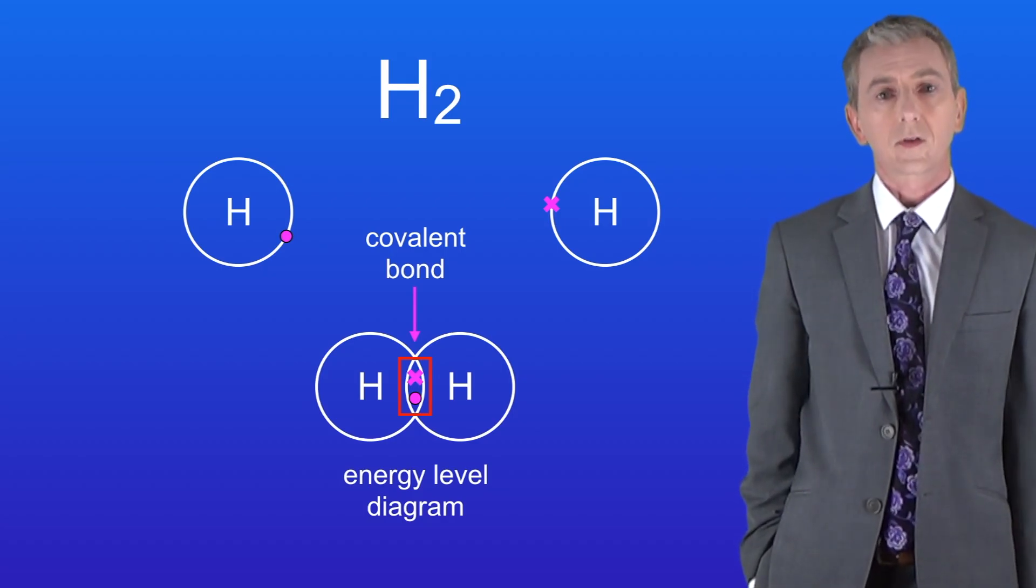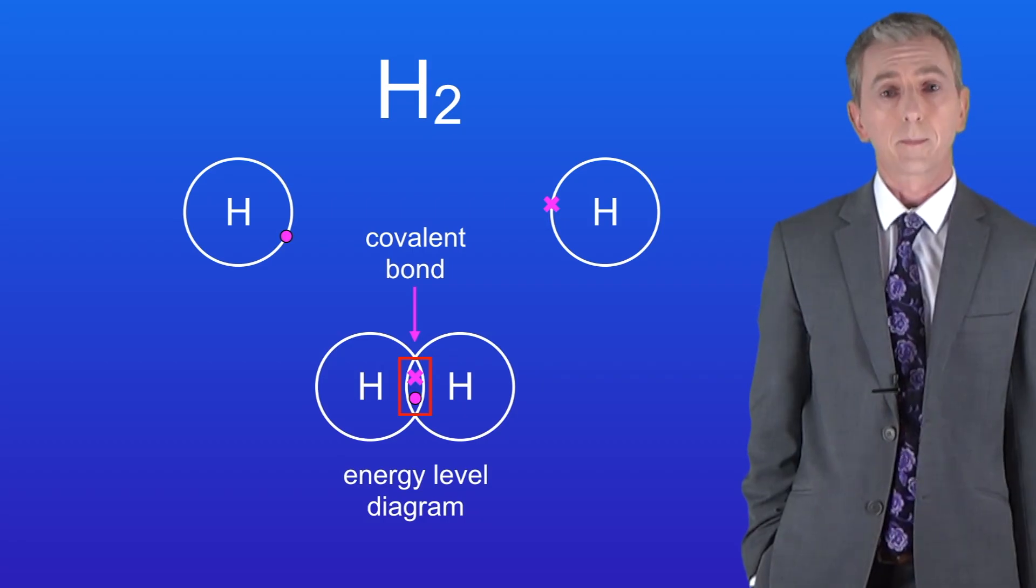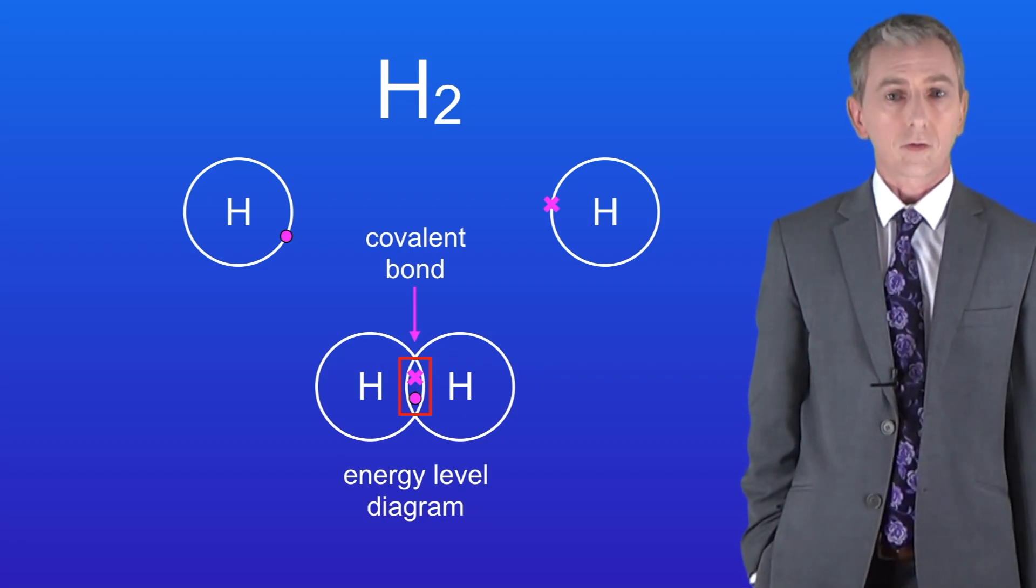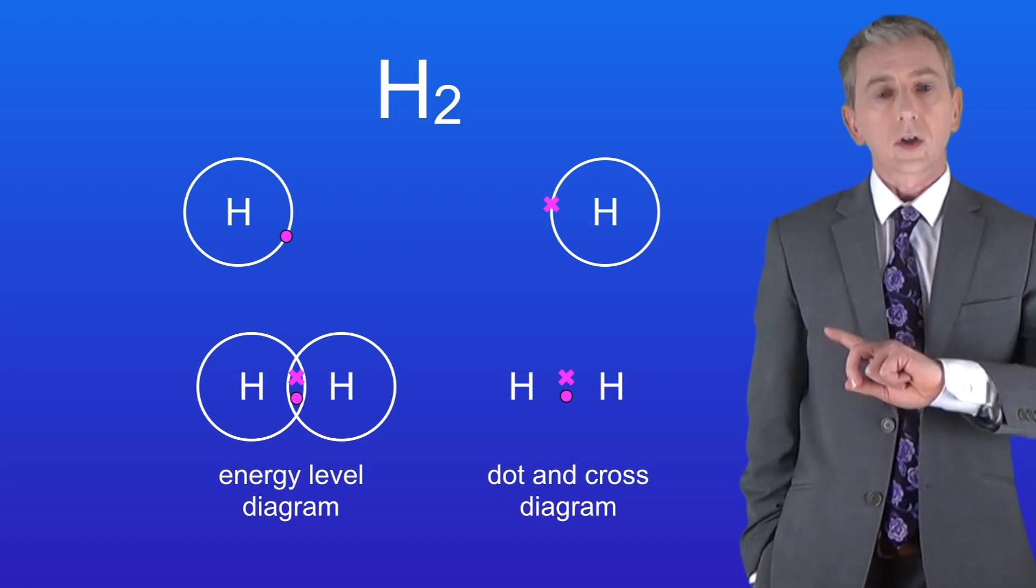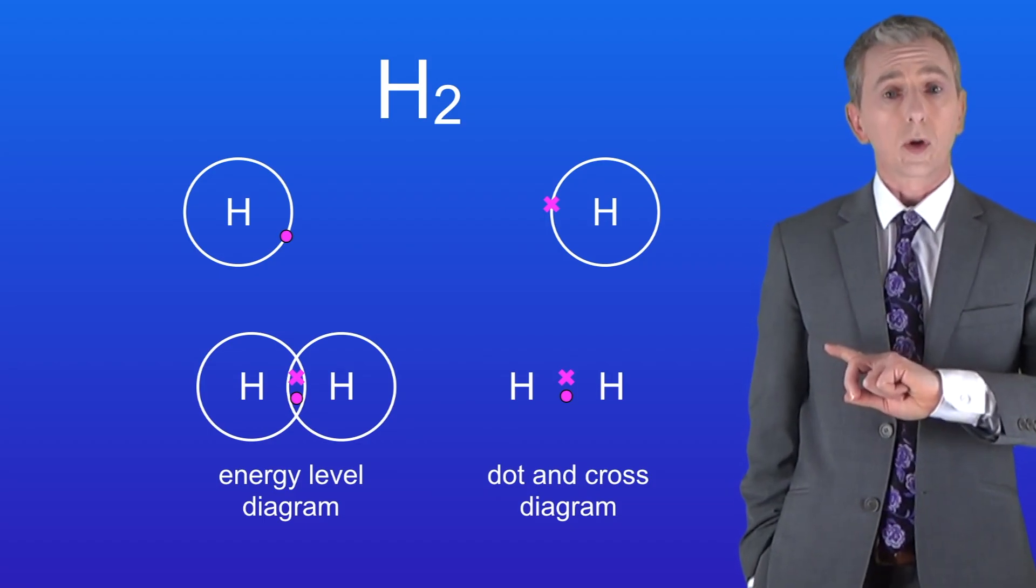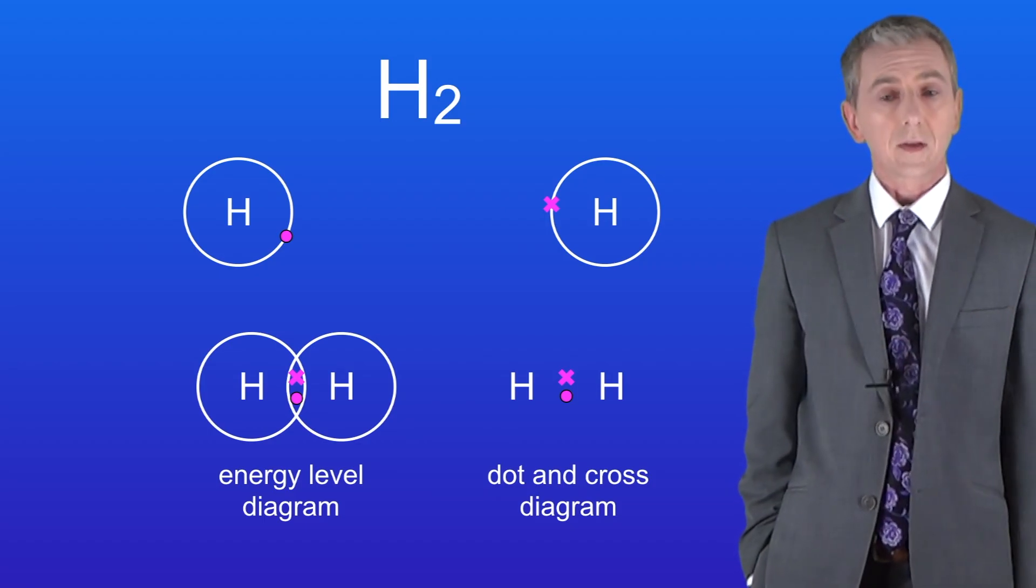Another way of representing this is called a dot cross diagram. This only shows the electrons not the energy levels. Here's the dot cross diagram for the hydrogen molecule. Again you could see this in your exam.